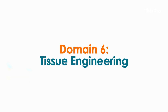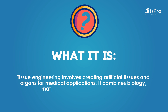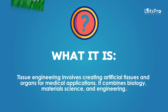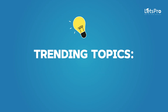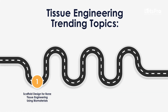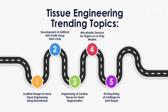Domain 6: Tissue Engineering. Tissue engineering involves creating artificial tissues and organs for medical applications. It combines biology, material science, and engineering. Trending topics include scaffold design for bone tissue engineering using biomaterials, development of artificial skin grafts using stem cells, engineering of cardiac tissues for heart regeneration, microfluidic devices for organ-on-a-chip models, and 3D bioprinting of cartilage for joint repair.